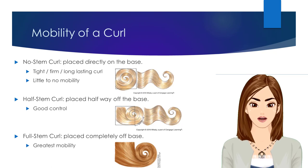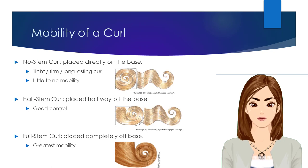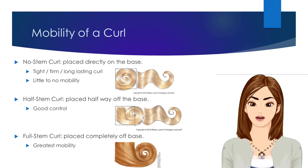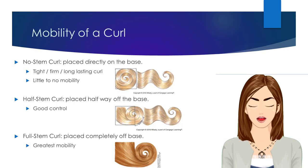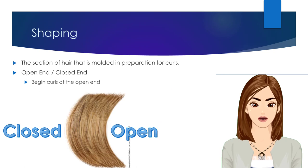A half stem pin curl provides good control to the hair. A full stem pin curl is one where the circle is wound and positioned sitting completely off of, or below the base section of the curl, and the full stem is exposed. A full stem pin curl provides the most movement. If a full stem pin curl is over exaggerated or not wound up completely, then the hair will be flat and straight at the scalp and curly towards the ends. A shaping is the section of hair that is molded in preparation for curls.